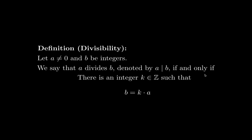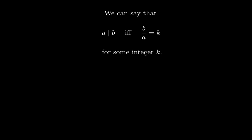There's an alternative definition for divisibility. We can say that a divides b if and only if the quotient b over a is an integer. So whenever b over a is an integer, we say that a divides b. That's probably the definition you're more familiar with if you haven't taken a number theory class.